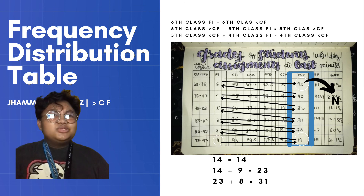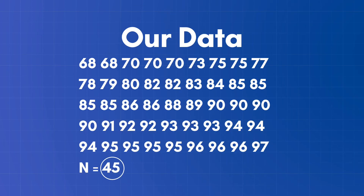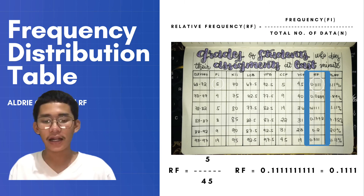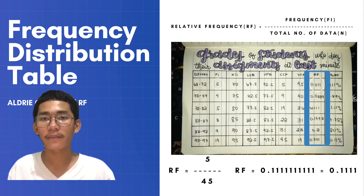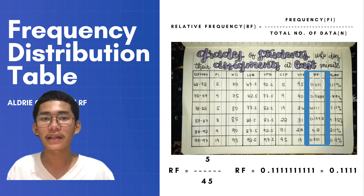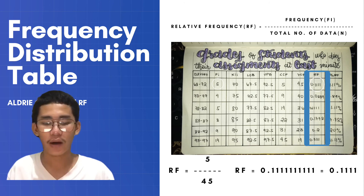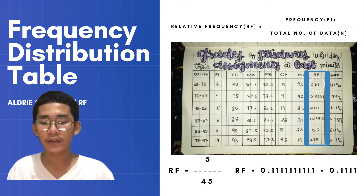After we know how to gather cumulative frequencies, we must proceed to getting the relative frequency. In getting the relative frequency, we divide the frequency by N, the total number of data. In our data, frequency is 5 and N is 45. 5 divided by 45 is equal to 0.1111. You will do the same for the others until you get all the relative frequencies.